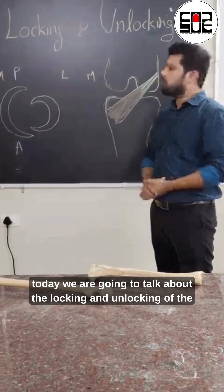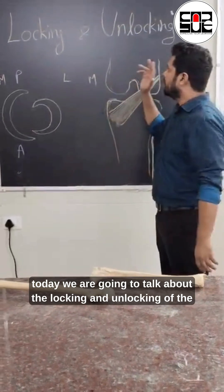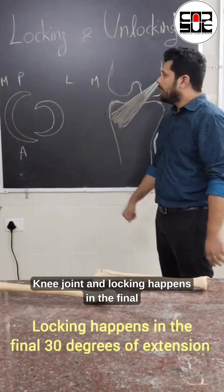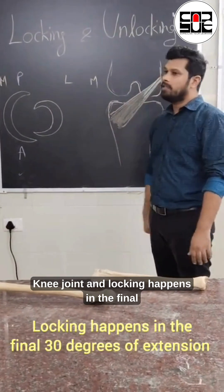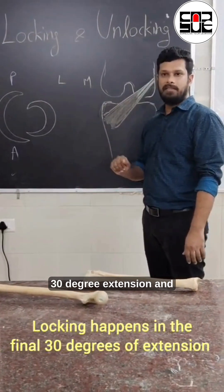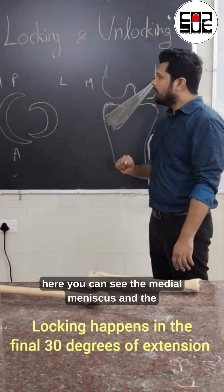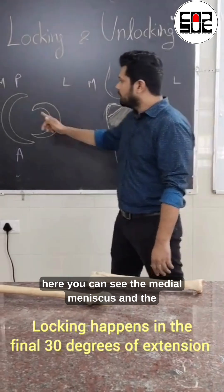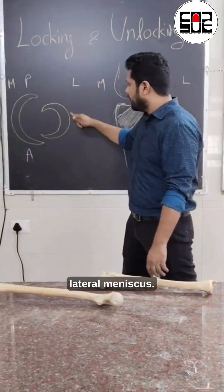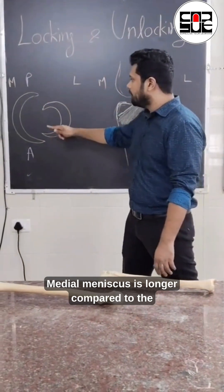Today we are going to talk about the locking and unlocking of the knee joint. Locking happens in the final 30 degrees of extension, and here you can see the medial meniscus and the lateral meniscus.